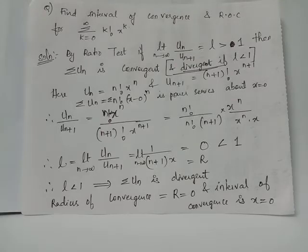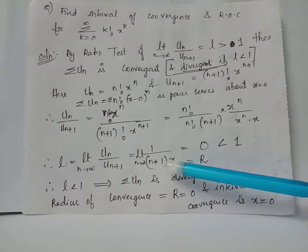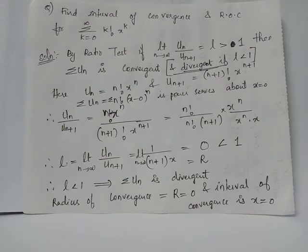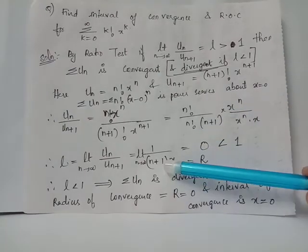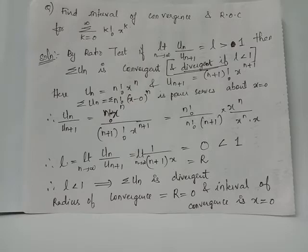We have the limit n tends to infinity of u_n by u_{n+1} giving us the radius of convergence R equals limit n tends to infinity of 1 over (n+1) times x. Since x is independent of n, taking n to infinity on 1 over (n+1) gives 0. This can be separated as the limit of 1 over (n+1) multiplied by 1 over x, but the limit applied to 1 over x has no effect. Since limit n tends to infinity of 1 over (n+1) equals 0, we have limit n tends to infinity of u_n by u_{n+1} equals 0.